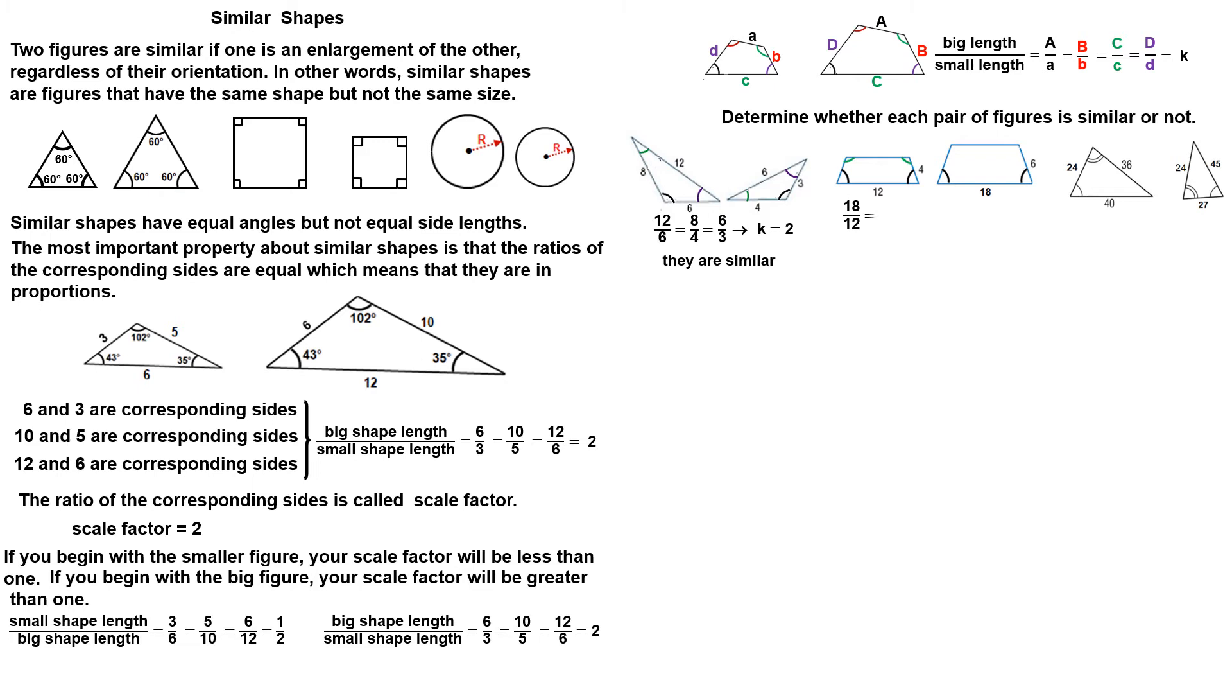Let's write the ratios. After simplifying, we can see that these two shapes are similar. The scale factor is 3 over 2. They are similar.